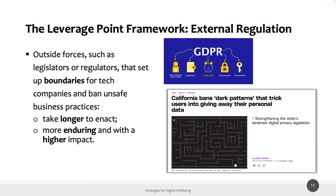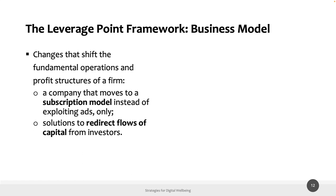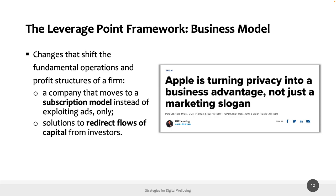We can also imagine additions to GDPR that address not only user privacy but also user attention. The fourth leverage point is business model: changes that shift the fundamental operations and profit structures of a firm, and probably more difficult to achieve. Practical examples include moving to a subscription model instead of relying only on advertising revenue. While there are no specific digital well-being examples yet, Apple is one case of turning privacy into a business advantage rather than just a marketing slogan.